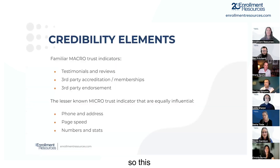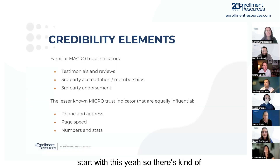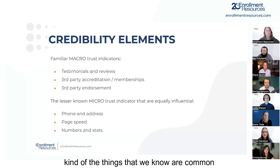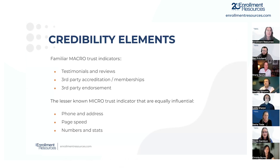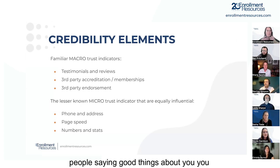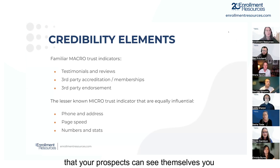There are kind of two levels of credibility. The macro level includes the things we know are common: your testimonials, your reviews, third-party accreditations, memberships, or endorsements — people saying good things about you. You've also got success stories so that your prospects can see themselves reflected in some way. Those are really important credibility indicators.